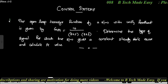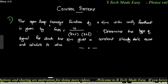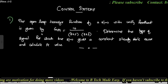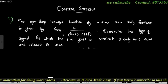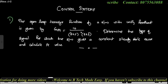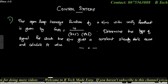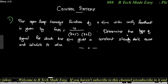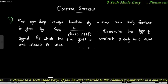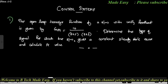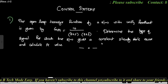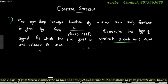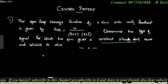First question: the open loop transfer function of a system with unity feedback is given by G(s) = 10 divided by (s+2)(s+3). Determine the type of the signal for which the system gives a constant steady state error and calculate its value.